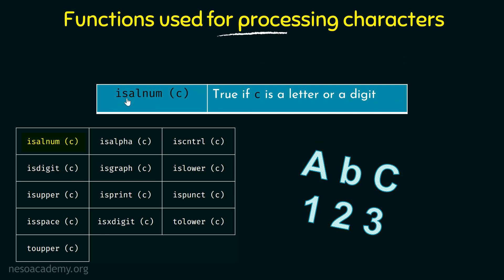The first function is called ISALNUM, where C represents the character we are trying to process. ISALNUM returns true if C is a letter or a digit. From the name itself, ALNUM means alphanumeric. So we are checking if the character C is alphanumeric — if it is a letter or a digit it returns true, and false otherwise. For example, characters like A, B, C, 1, 2, 3 would return true, while special characters or whitespace would return false.